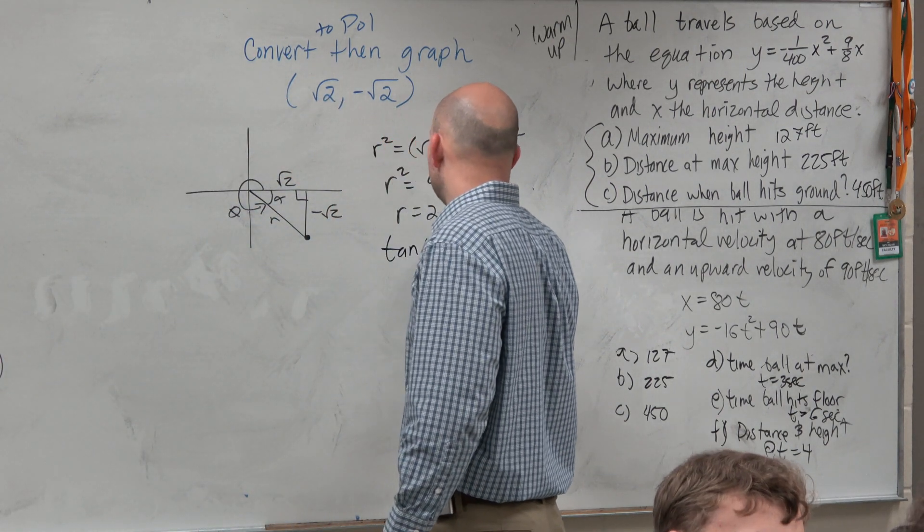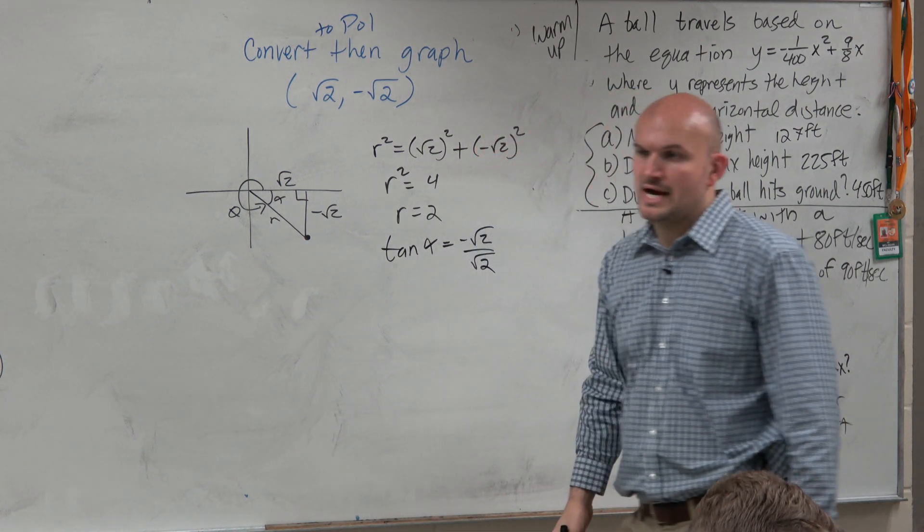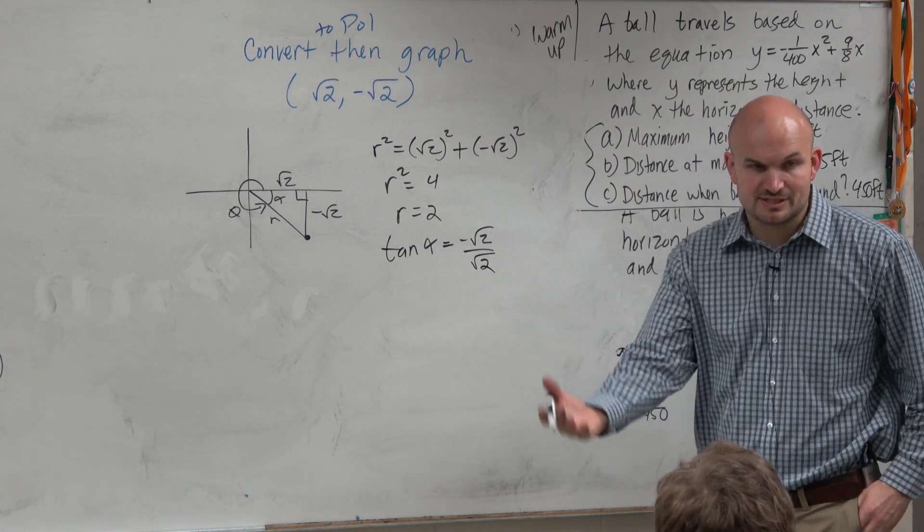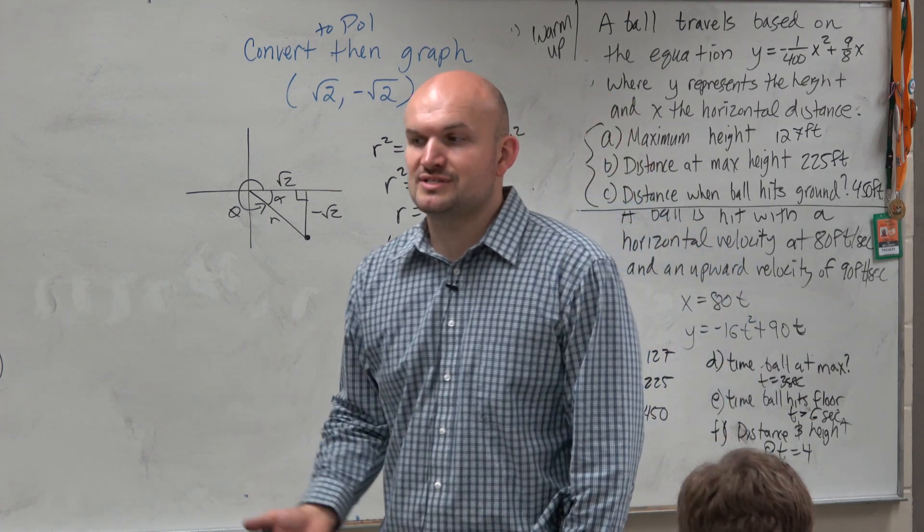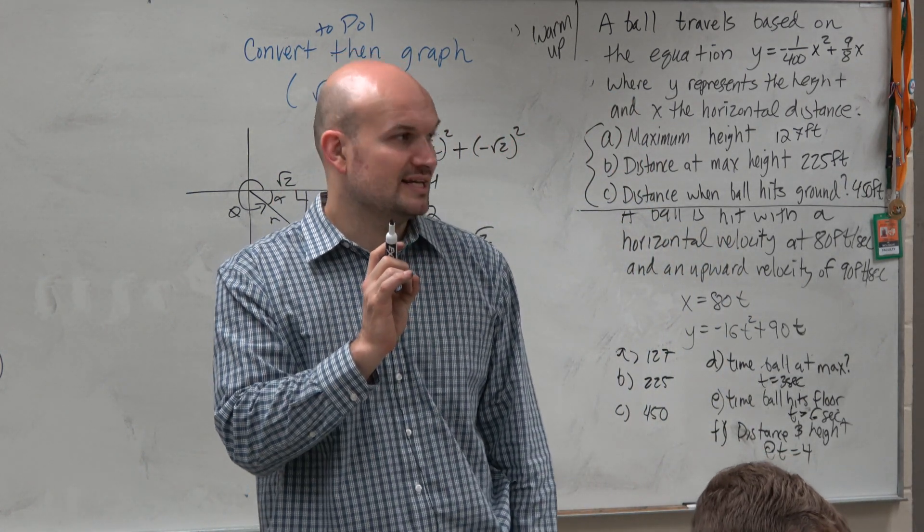Tangent of alpha equals negative square root of 2 over square root of 2. Now, hopefully, when you guys type this into your calculator, you've got to understand, like if you type this in your calculator in degree mode, this is going to give you what?